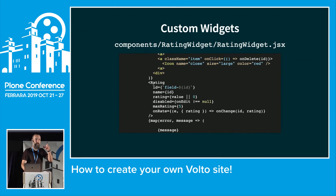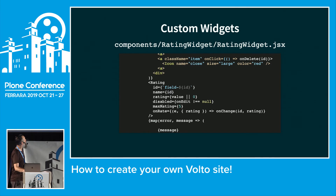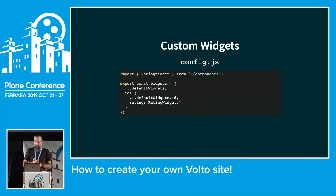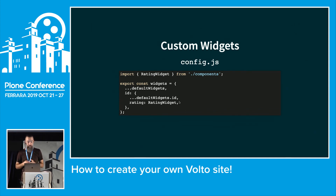You don't have to write the fancy stars yourself — just use the Rating component from Semantic UI since it already provides that widget. We set the maximum to five stars and the value to whatever the backend provides. Same as with views, we wire it up in the index file and export it. There's a config option for widgets as well — we import the normal widgets and add the rating widget.